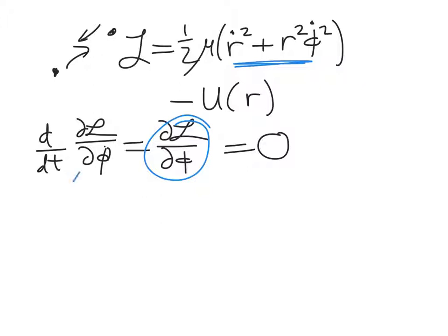The left-hand side, remember this term here, that is by definition the generalized momentum for phi. And so the fact that the right-hand side of this equation is zero means that P phi dot is zero. In other words, that P phi is a constant.